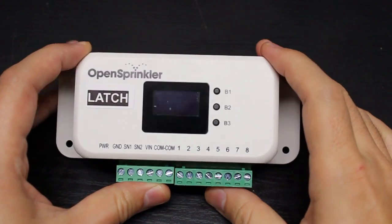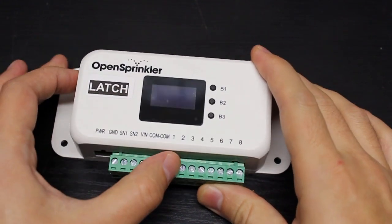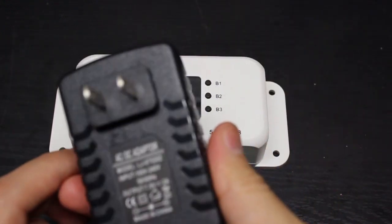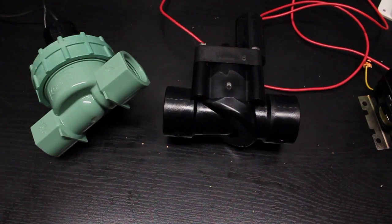Lastly we also have OpenSprinkler Latch indicated by the latch label on the top. This controller is also powered by a DC power adapter but it's only compatible with latching solenoid valves. So how do you tell if you have latching solenoid valves?